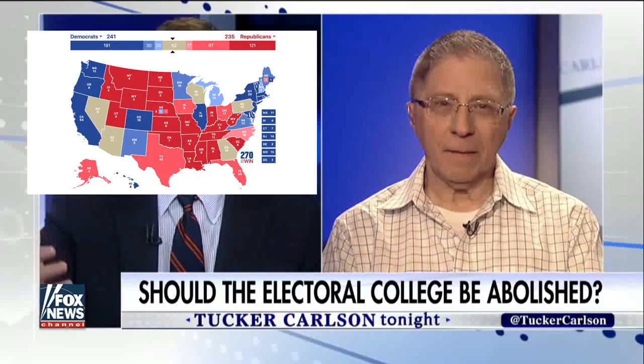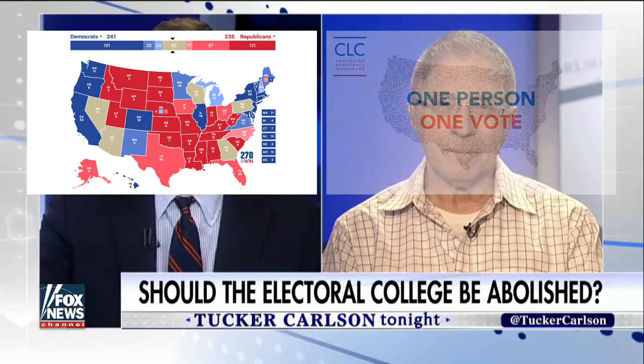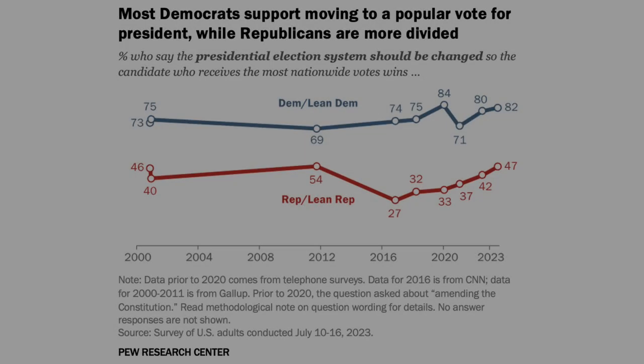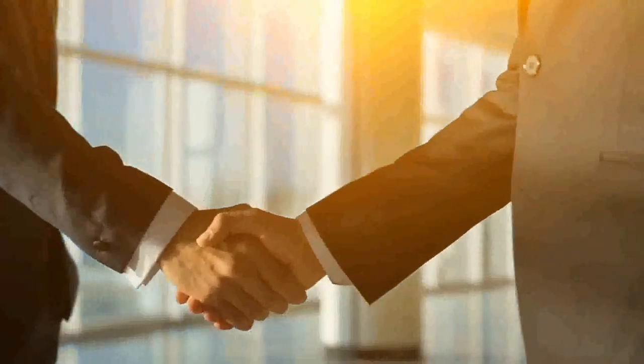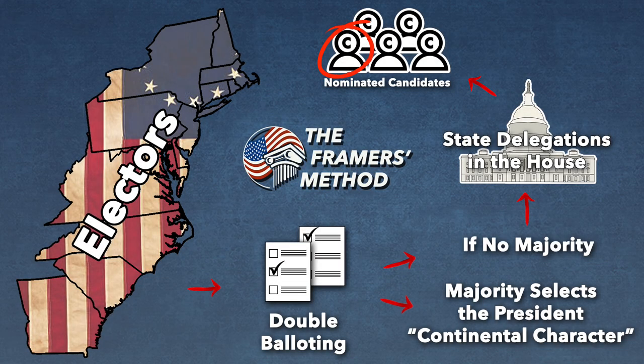In the debate over reforming the modern electoral college, the only options discussed seem to be either maintaining the status quo or switching to the popular vote. The status quo seems more likely because switching to the popular vote may be impossible, as Republicans generally feel the current system benefits them, meaning that any reform requires agreement from both parties. One reform option that is never discussed is the original electoral college.